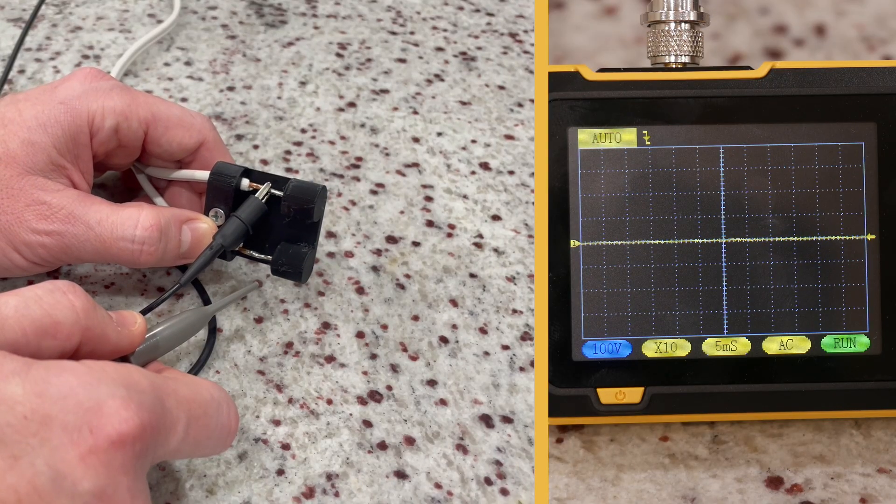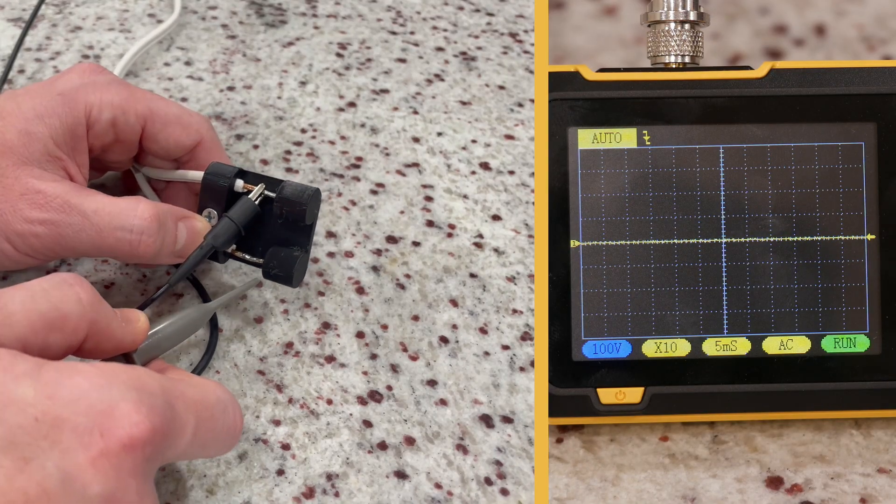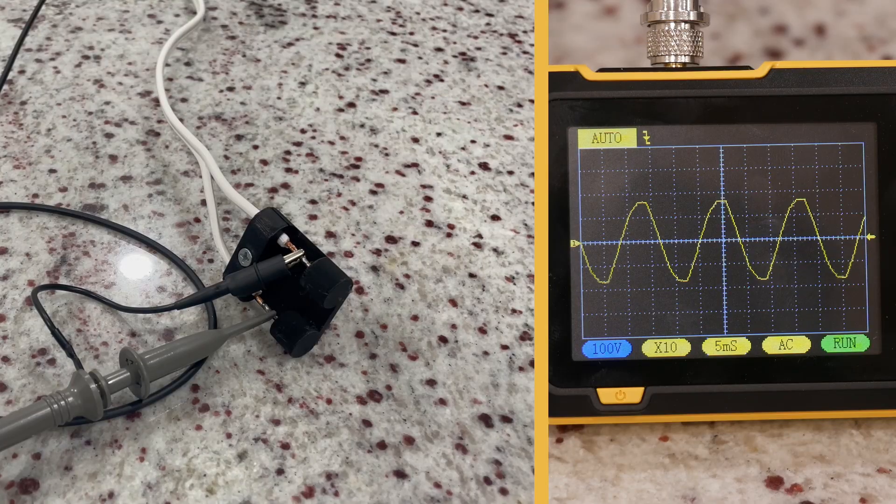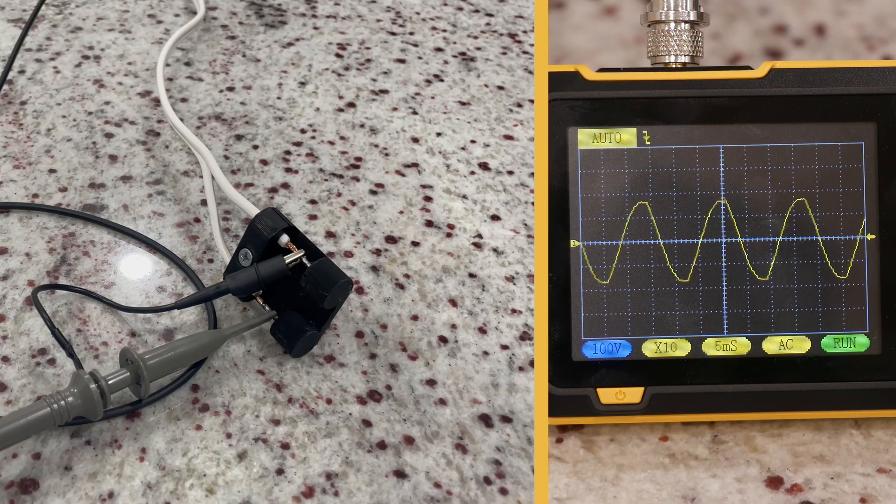And I've changed the y-axis grid lines to 100 volts. And there we see the pure sine wave coming out of my home's electrical outlet.